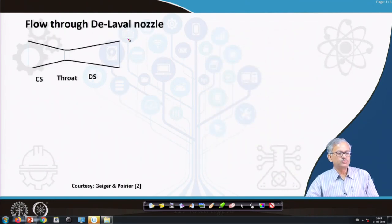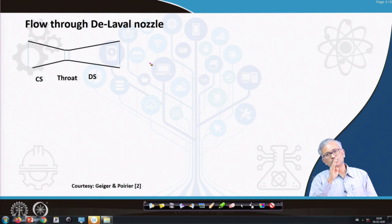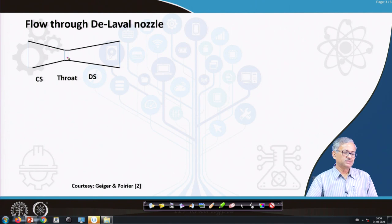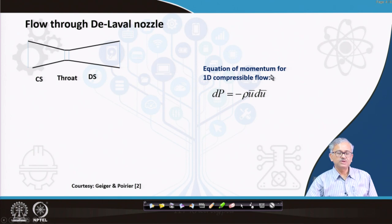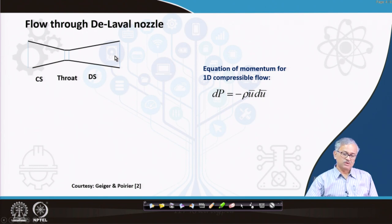Let us consider the flow through the De Laval nozzle - how the convergent-divergent nozzle produces a supersonic core and why the oxygen jet emerges at supersonic velocity at almost atmospheric pressure. The nozzle has three portions: the convergent section, a throat which is a cylindrical section, and the diverging section where the nozzle diverges outward.